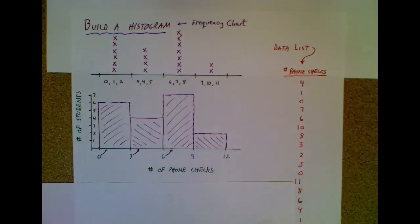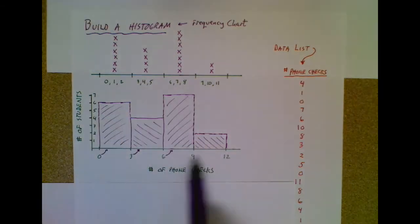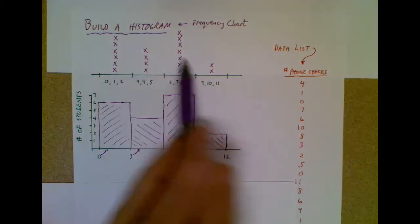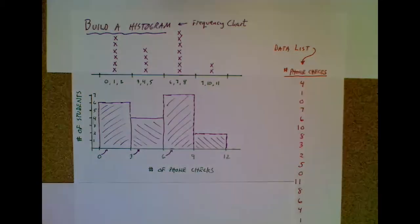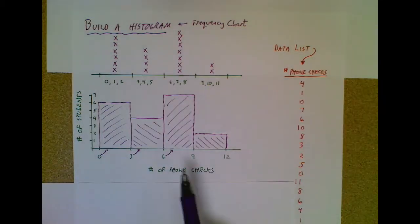So now, when I look at a histogram, I'm probably going to be presented with just this. I wouldn't see this, and I may not even see the list of data. So if I look at this, I can say, oh, there are, this bar goes up to two.